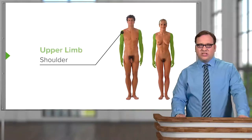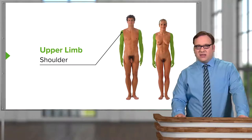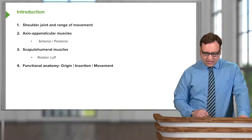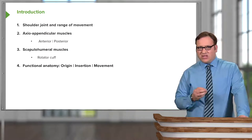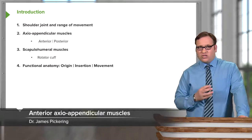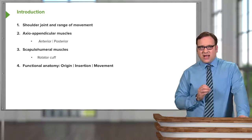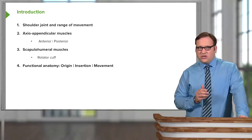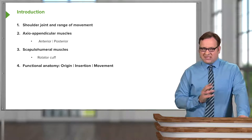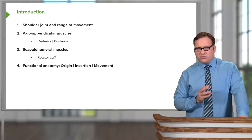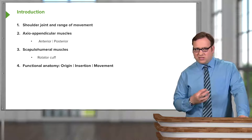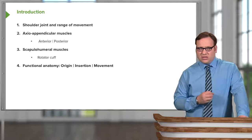In this lecture, we're going to look at the shoulder region, specifically the axio-appendicular and the scapulohumeral muscles. We're going to look at the shoulder joint and its range of movement, and specifically how the muscles enable the shoulder to move — the anterior and posterior axio-appendicular muscles. We'll then look at the scapulohumeral muscles and how some of these form the rotator cuff, coming from the scapula to the humerus. We'll then look at the functional anatomy of these with their origin, insertion, and the movements they can allow the shoulder to perform.